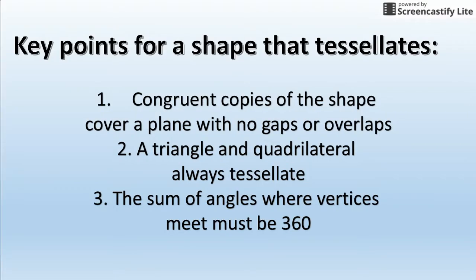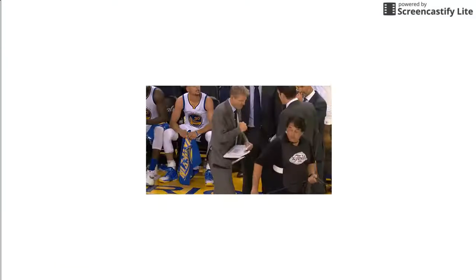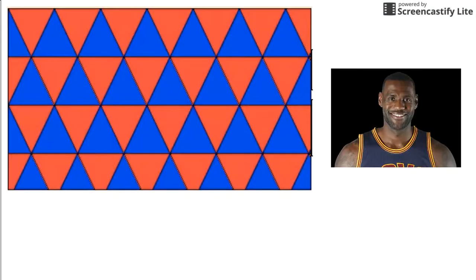All right. And the last thing is, the sum of angles where the vertices meet must be 360 degrees. All right. Well, let's go back here. Vertices, all these points meet. If you add them up, one, two, three, four, five. If you add those six angles up, it equals 360 degrees.